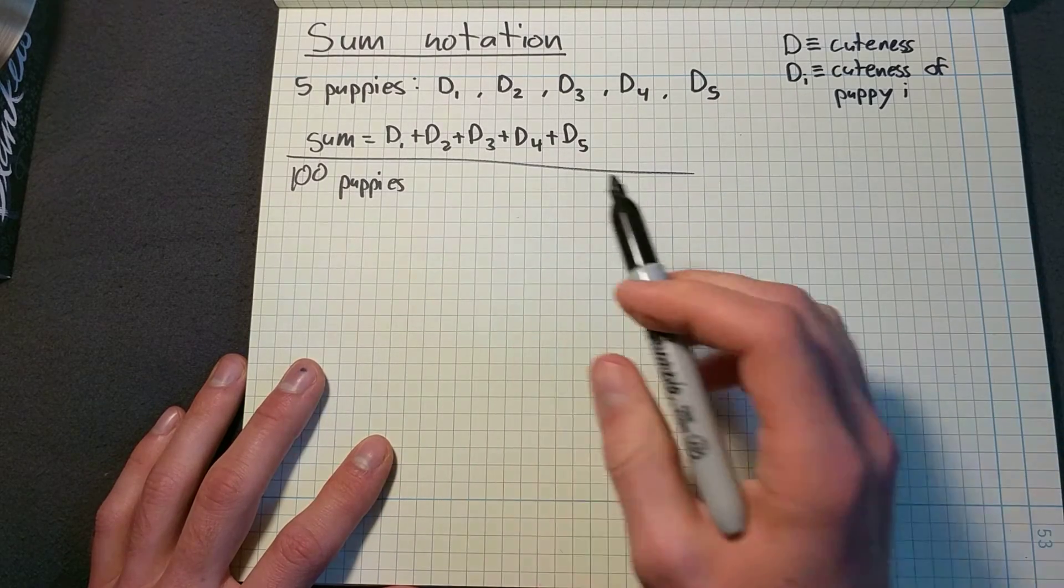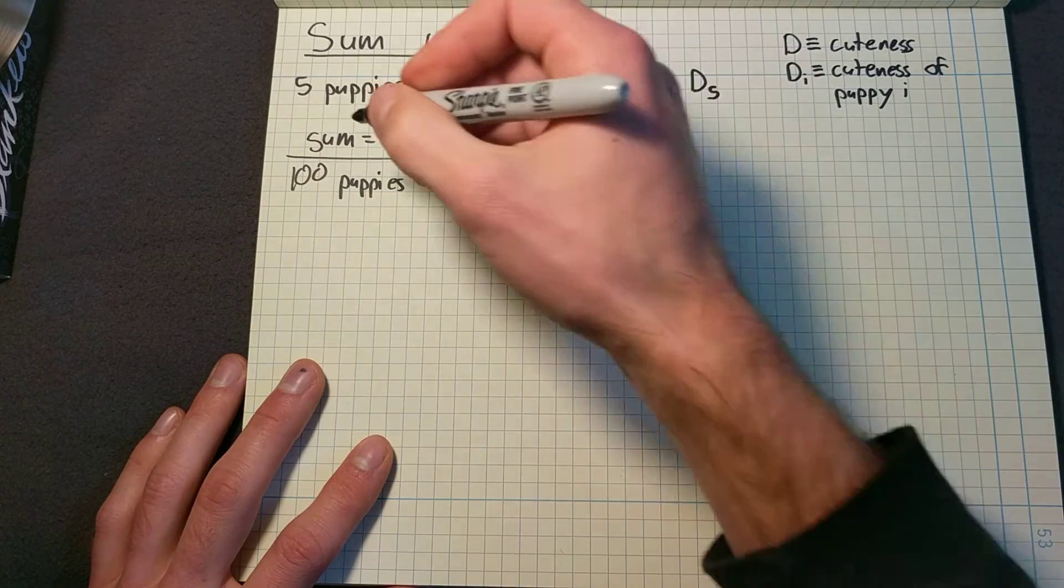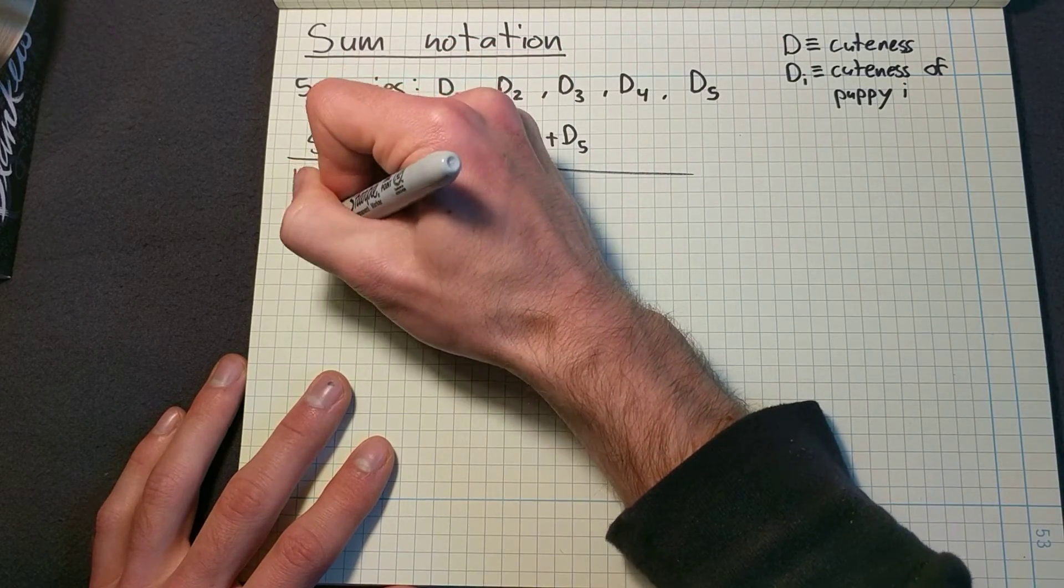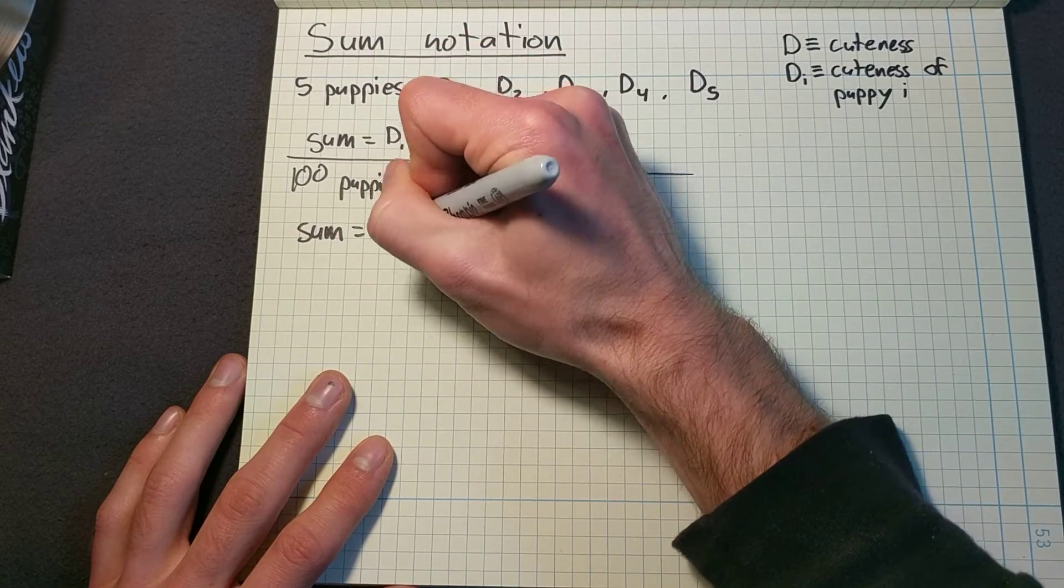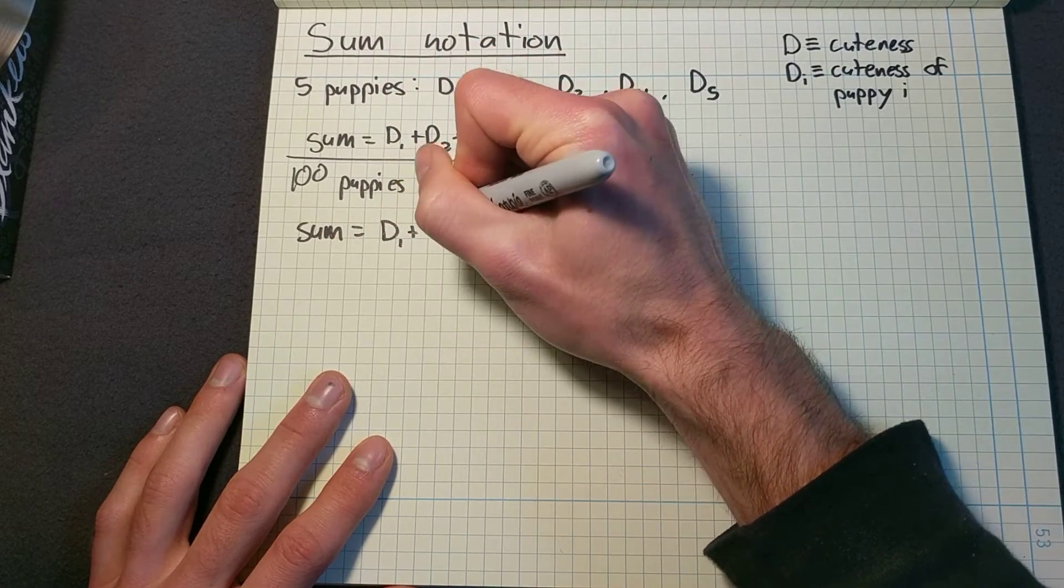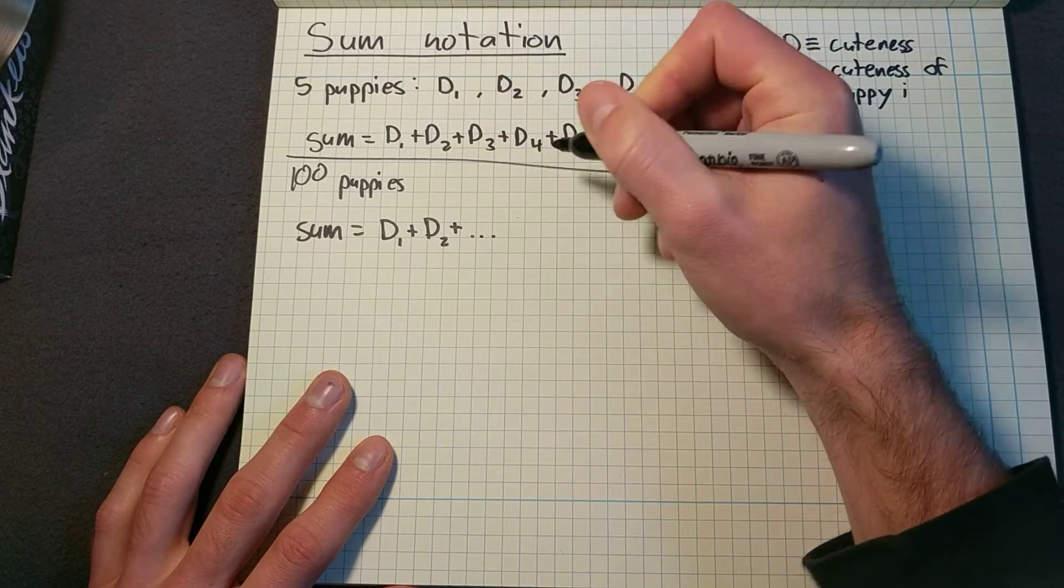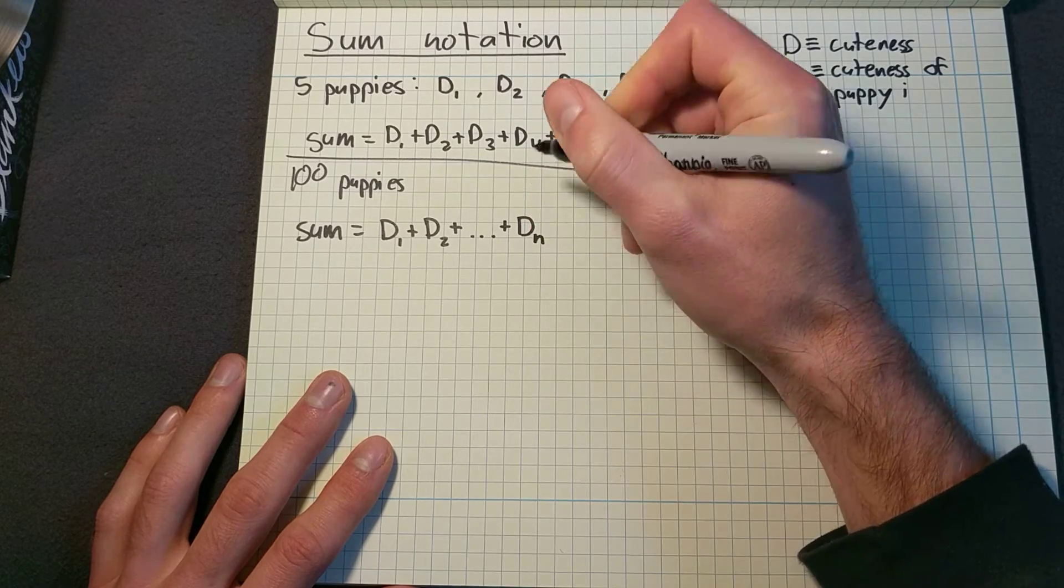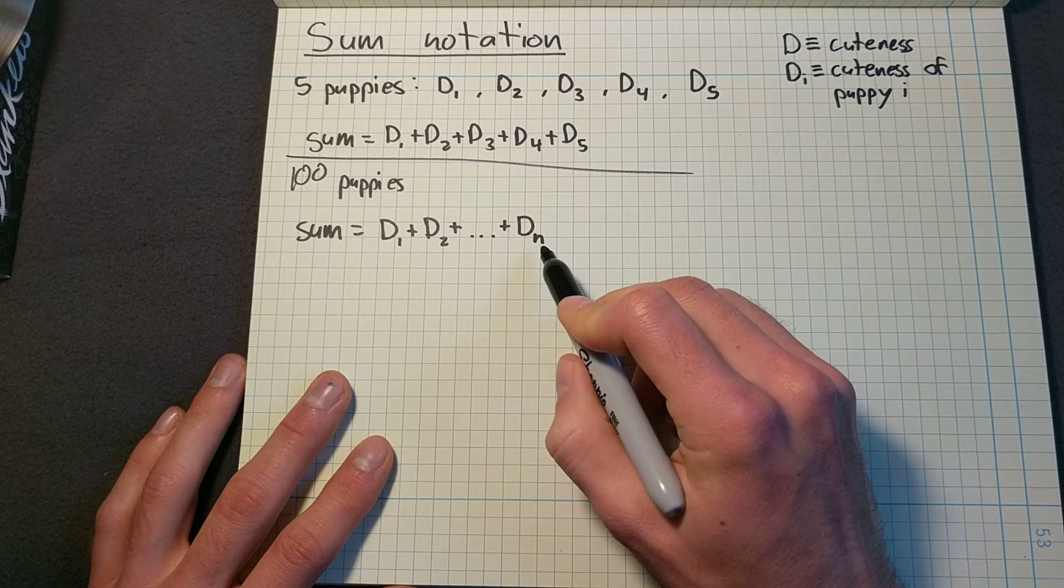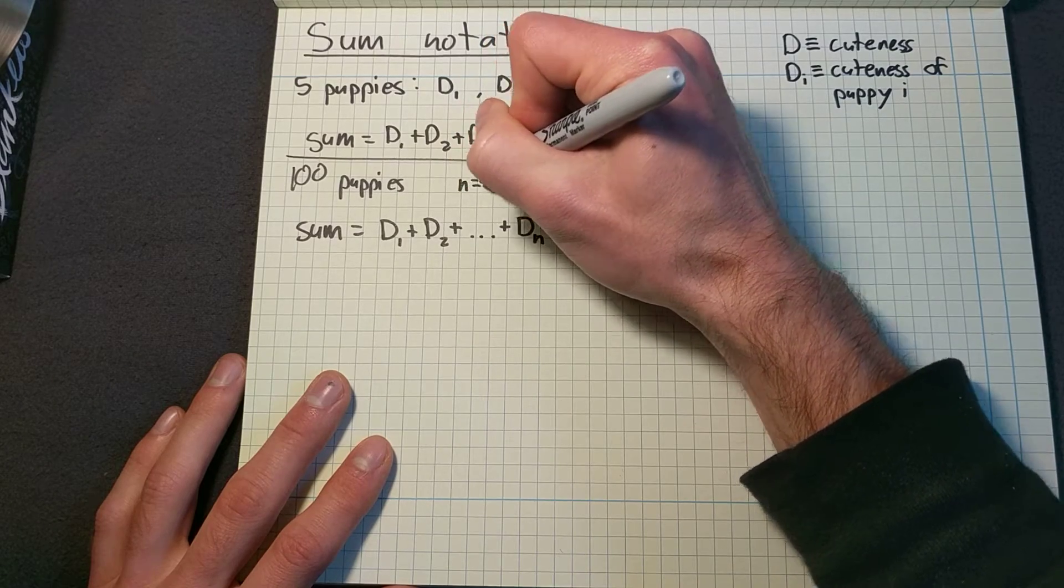So one way that you very frequently see in mathematics is dot, dot, dot. So the sum for a hundred puppies we could write as D one plus D two plus dots plus D N. And then for us, N is the number, and N equals 100.